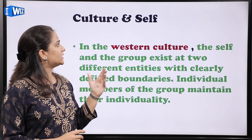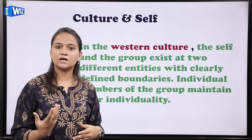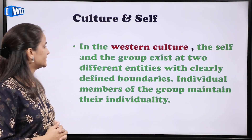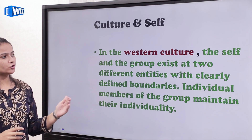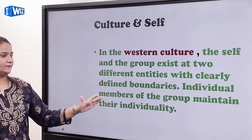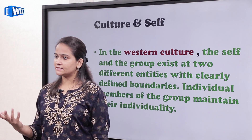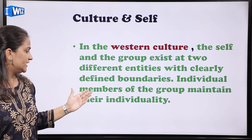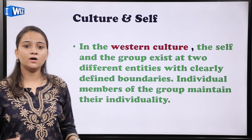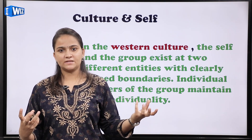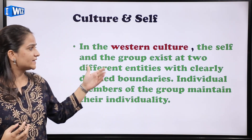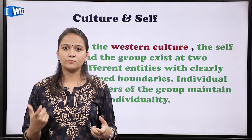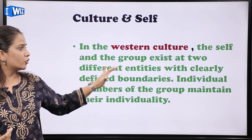Next topic है culture and self। इस topic में हम बात करेंगे कि इनसान का culture उसके self को कैसे influence करता है। In the western culture, the self and the group exist as two different entities with clearly defined boundaries। Individual members of the group maintain their individuality — पहले मैं एक इनसान हूँ, उसके बाद मैं किसी family से आता हूँ। इसलिए इन देशों को individualistic countries भी कहा जाता है, because their self-interest comes before any other group interest।